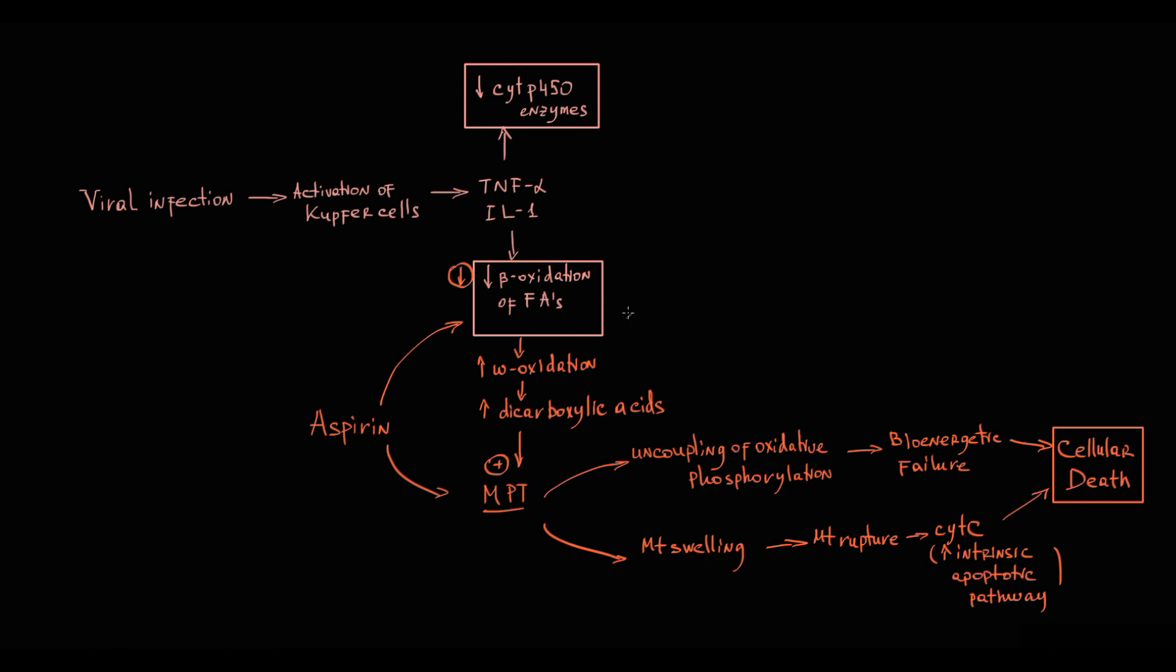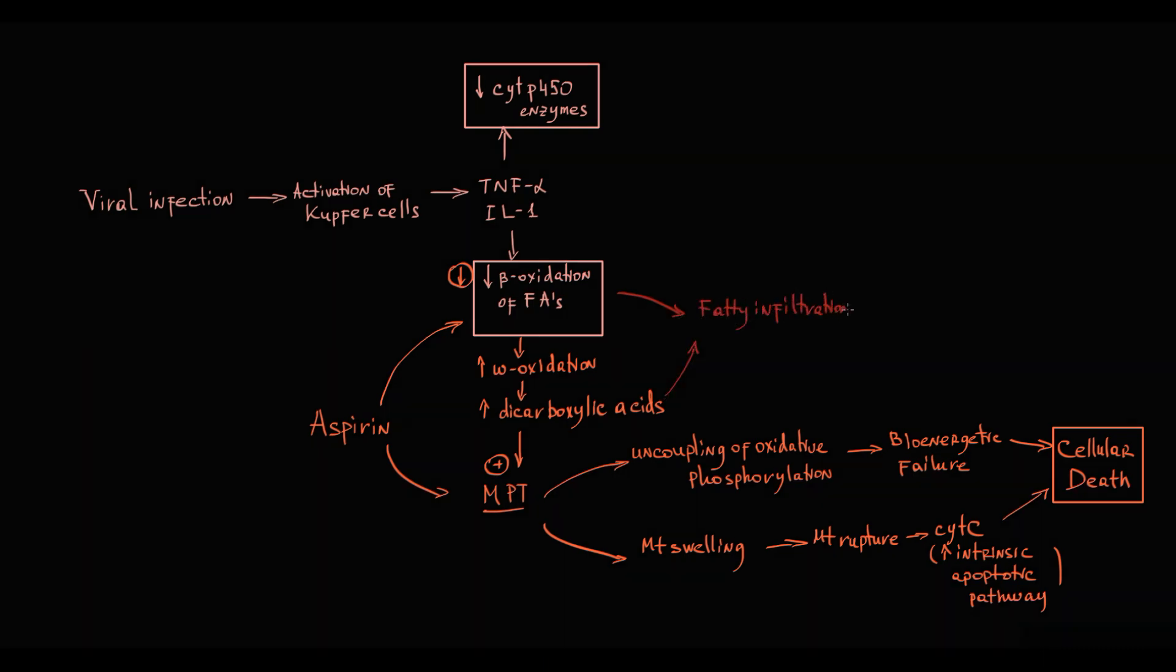Because normal mitochondrial beta oxidation is disrupted, fatty acids progressively accumulate in tissues. Histologically, it manifests as fatty infiltration of the viscera, which is the first signature feature of Reye syndrome.